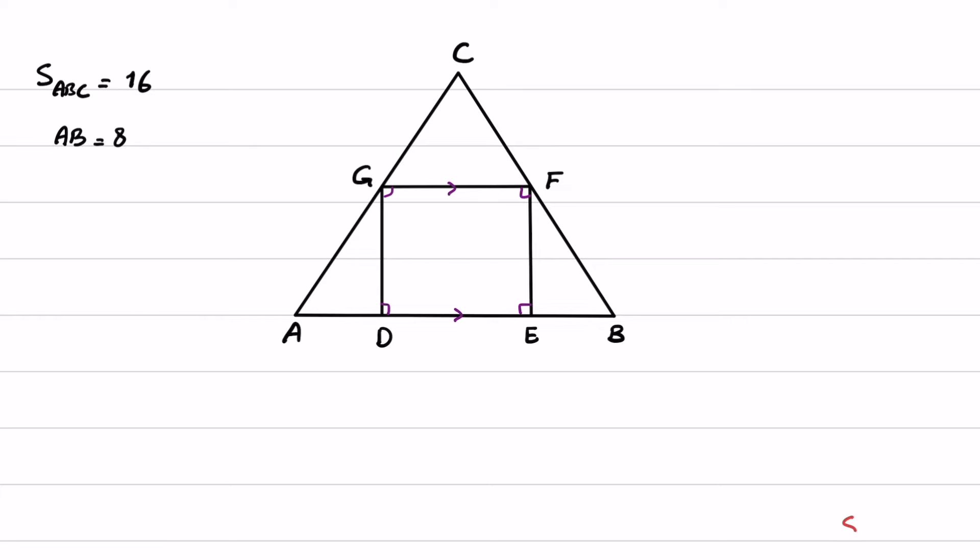Welcome to a new episode of MathDartic. In this question, triangle ABC is given and we have a square inside this triangle. The area of triangle ABC is given as 16 and the length of AB is 8. The question asks to find the area of this square.